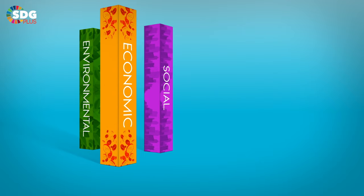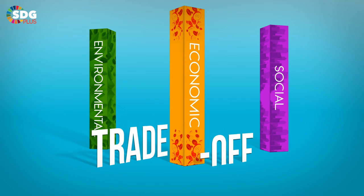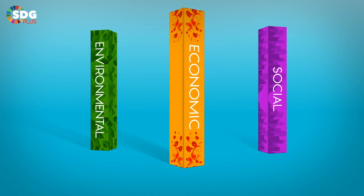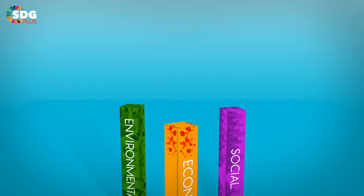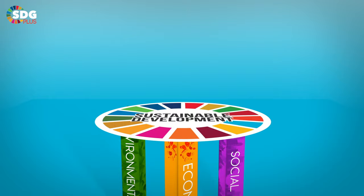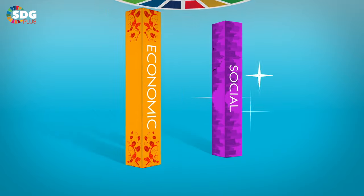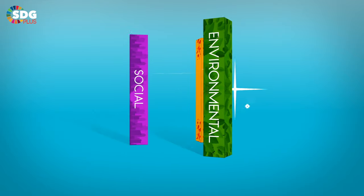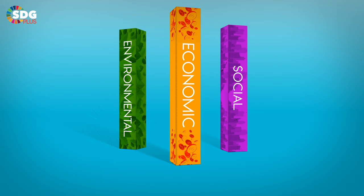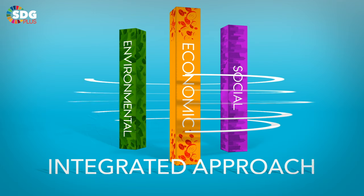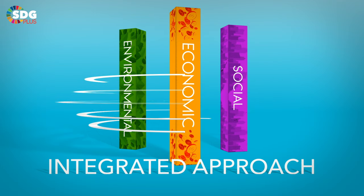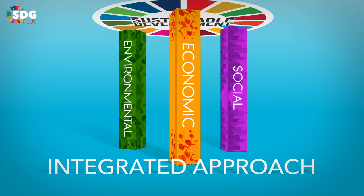It is clear that trying to address any of the three pillars of sustainability in isolation will often result in a trade-off. Imagine the three pillars as actual physical pillars supporting sustainable development – even if one of the pillars is weak, the whole thing can collapse. Therefore, this will require a balancing approach, one where we try to pay equal attention to all three pillars. This is called an integrated approach, where each pillar is evenly shouldering the weight of sustainable development.